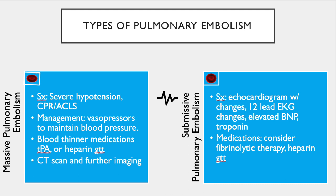For a sub-massive PE, you want to do an echocardiogram — there will be right ventricular dysfunction. A 12-lead EKG may show ST elevation, T-wave inversion, or a right bundle branch block, and elevated labs of BNP or troponin. Medications would include fibrinolytic therapy and heparin, and treatment would be a shared decision between your healthcare provider, the patient, and family.